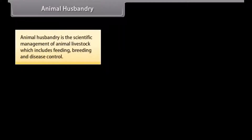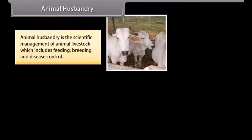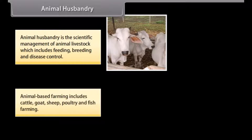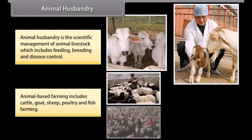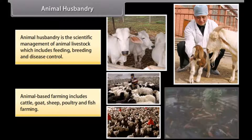Animal husbandry is the scientific management of animal livestock, which includes feeding, breeding and disease control. Animal-based farming includes cattle, goat, sheep, poultry and fish farming.